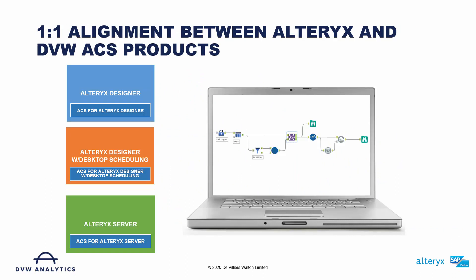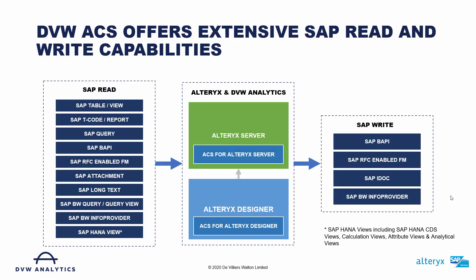The ACS products align one-to-one with the products offered by Altrix. For Altrix Designer we have the ACS for Altrix Designer. If you have Altrix Designer with a desktop scheduling or automation add-in, we have our ACS for Altrix Designer with Desktop Scheduling. And if you have Altrix Server then we have our ACS for Altrix Server. All these products have common capabilities — the ACS provides the ability to read data from a wide range of SAP systems into Altrix and also write data from Altrix into a wide range of different SAP systems.